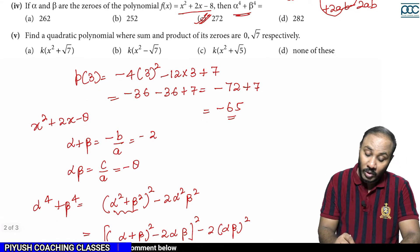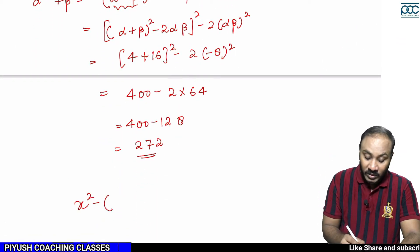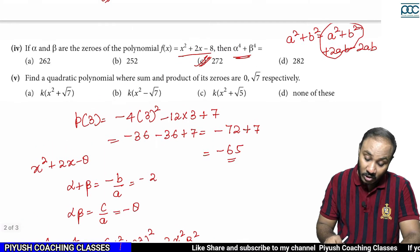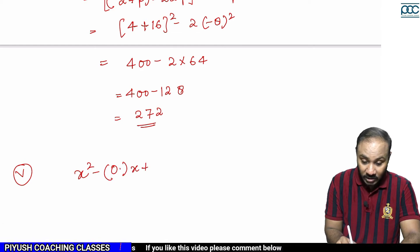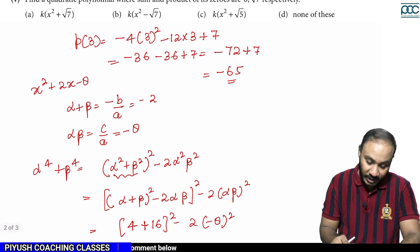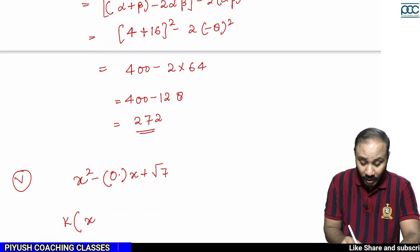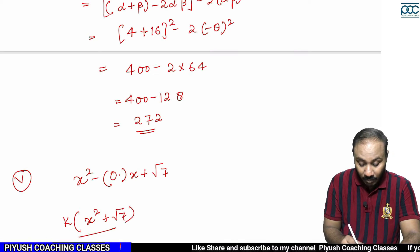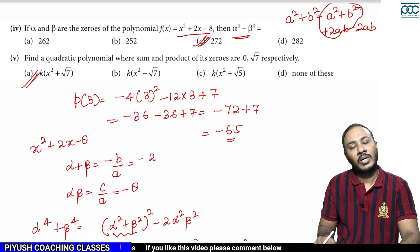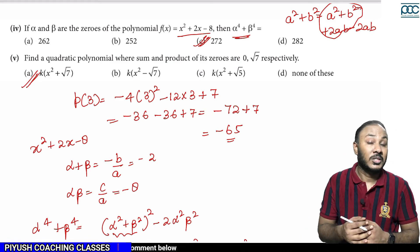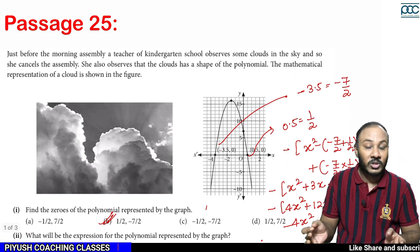Find a quadratic polynomial where the sum and product of zeros are given as 0 and root 7. Using the formula x² − (sum of zeros)x + (product of zeros), with sum = 0 and product = √7, we get: x² + √7. So the polynomial is x² − (sum of zeros) × x + (product of zeros). Very simple and interesting case study question.